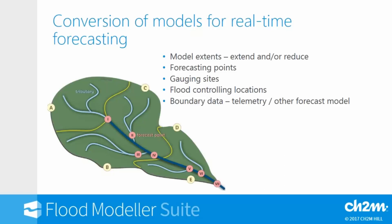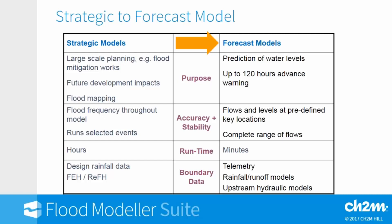We also need to consider where our inflows or inputs come into our models. Generally they come from telemetry at gauging stations, but they can also come from an upstream rainfall runoff or other hydraulic model, or maybe from a coastal model if we're applying a tidal boundary at the downstream end.